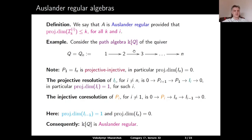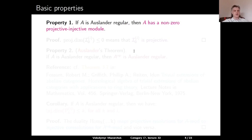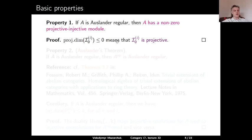Let us now discuss some basic properties of Auslander-regular algebras. Property number 1: if A is Auslander-regular, then it has a non-zero projective-injective module. Indeed, the projective dimension of the degree-0 homological component of any I^i should be at most 0, which means that it must be a projective module. This proves our observation.